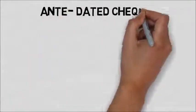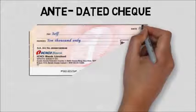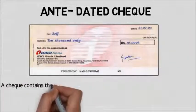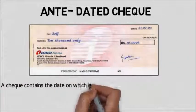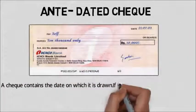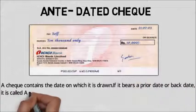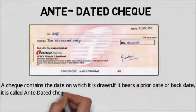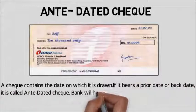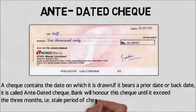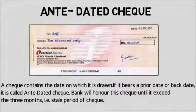Anti-dated checks contain the date on which the check is drawn. If it bears a prior date or back date, it is called an anti-dated check. The bank will honor this check until it exceeds 3 months, at which point it becomes a stale check.